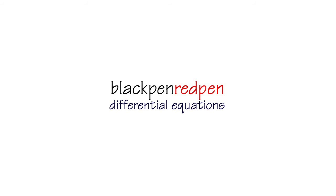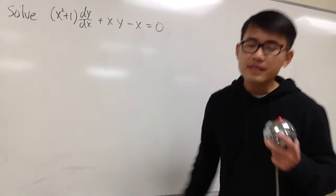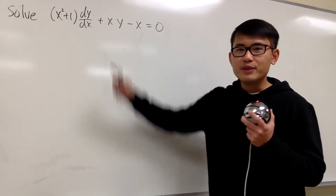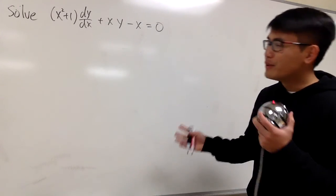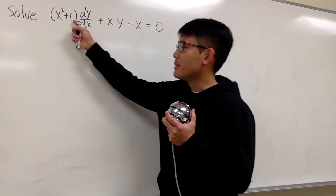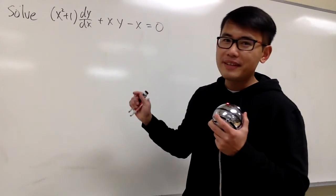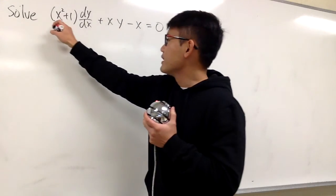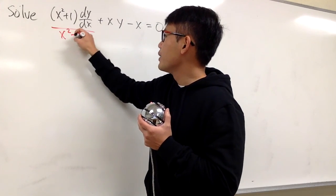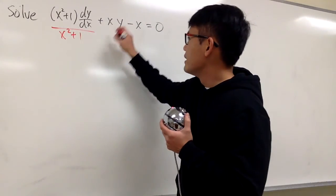Black pen, red pen, yay! Let's solve this first-order linear differential equation. We have x squared plus 1 in front of dy/dx, so let's go ahead and divide everything by x squared plus 1.